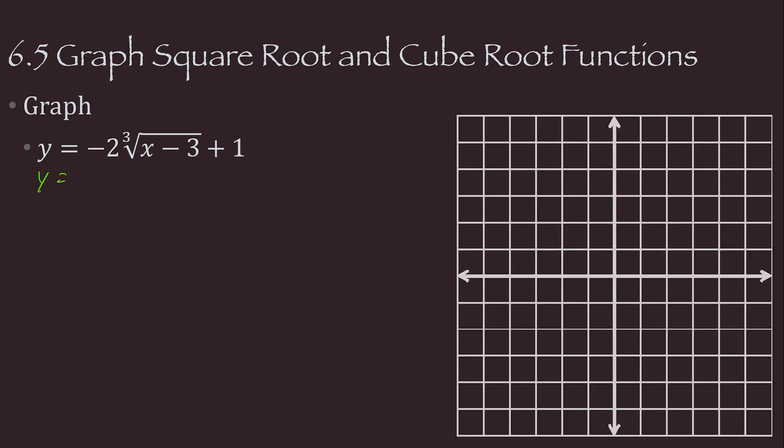Alright, let's graph this. To do this, let's check our transformations. A is negative 2. Oh hey, I forgot, the negative means that it gets flipped over the x-axis, so it's upside down. And it's stretched by 2, so it's twice as tall. H is 3, K is 1, so it moves 3 right and 2 up.